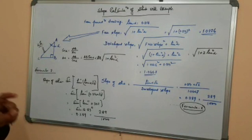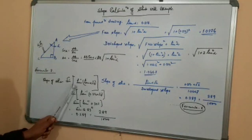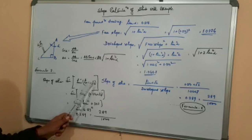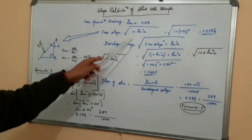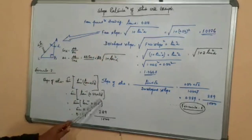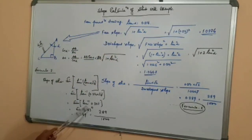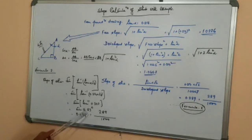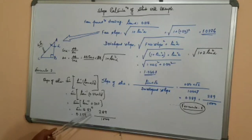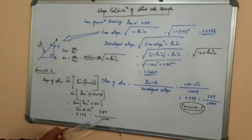The second formula is: slope of staff = sin(tan⁻¹(tan alpha × root 2)). Put tan alpha = 0.214, multiply by root 2 to get 0.302. Then tan⁻¹(0.302) = 16.83 degrees. Now sin(16.83°) = 0.289, meaning 289 per thousand. Both formulas give the same result.